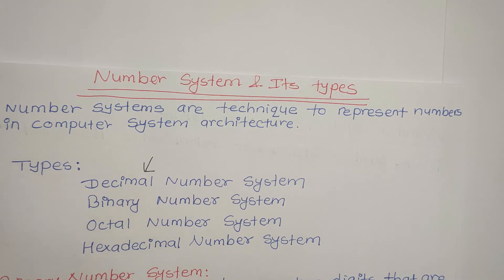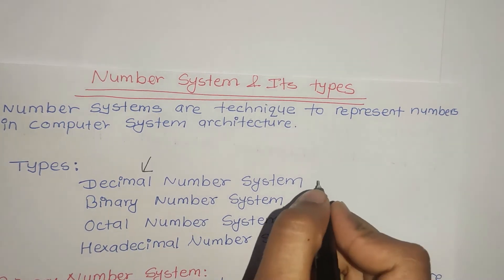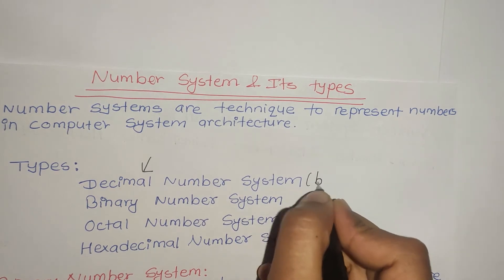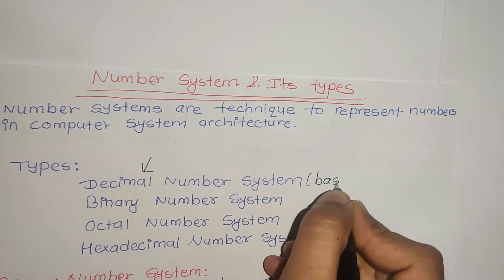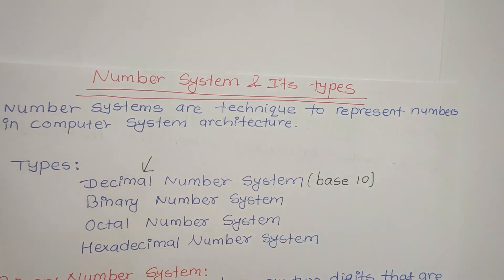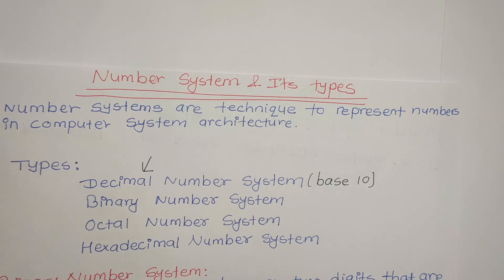The decimal number system is based on its base. The base of a number system is determined by how many digits it uses.